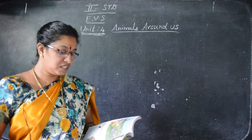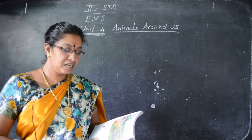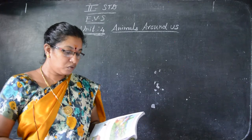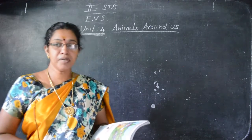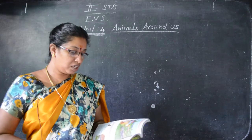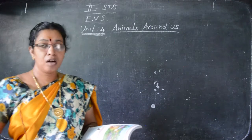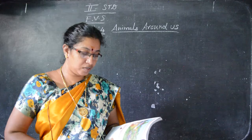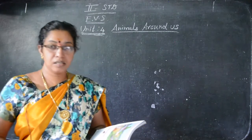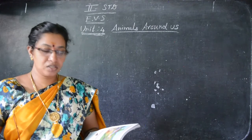Chikku then visited the donkey. The donkey said: 'Hello Chikku, I am a donkey. I am grey in colour. People use me to carry loads. My young one is also called a foal — F-O-A-L — same as the horse. My home is also called a stable.'